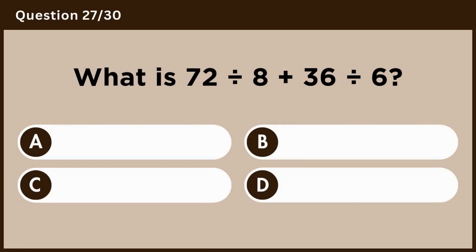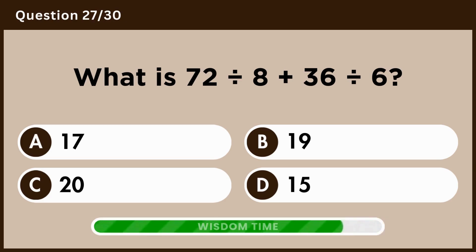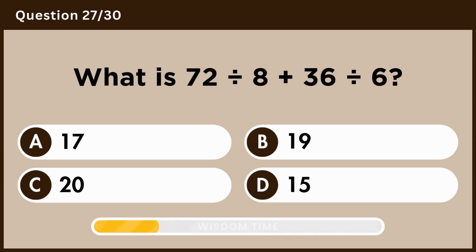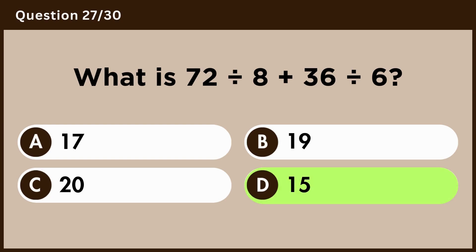What is 72 divided by 8 plus 36 divided by 6? Answer D, 15.